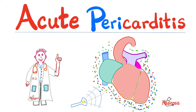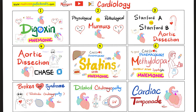Acute pericarditis is acute inflammation of the pericardium of the heart, which is the outermost layer of the heart. Acute pericarditis could be dry, or it could be wet, i.e., with effusion. It could be idiopathic — unknown cause — or it could have a cause. This is my cardiology playlist; please watch these videos in order.